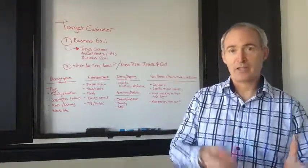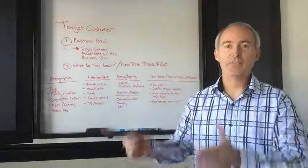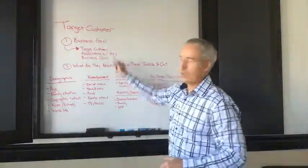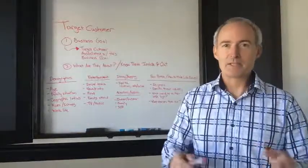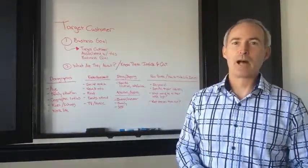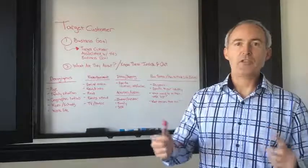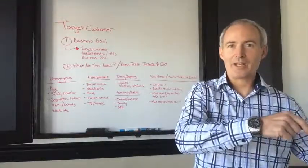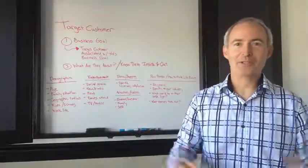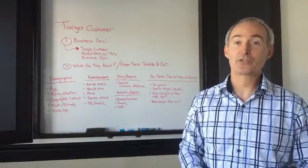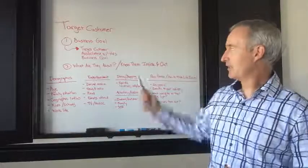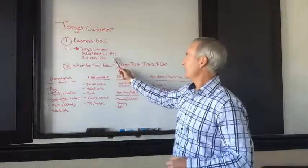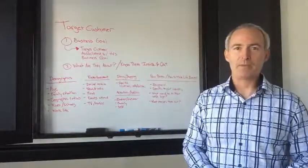In terms of the structural process of developing a marketing plan, step number one: you get that business goal — that top priority business goal that you developed during the previous homework I gave you, which was to go through and develop your business goals for next year, essentially your business plan. So taking your number one business goal, you have to figure out which target customer is associated with that business goal.